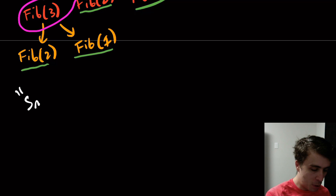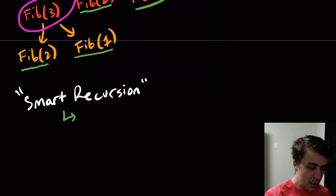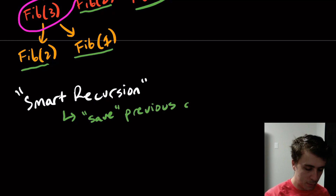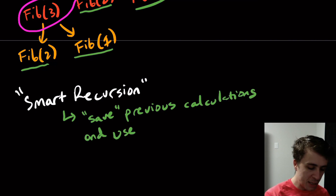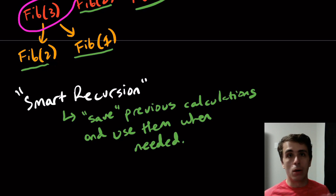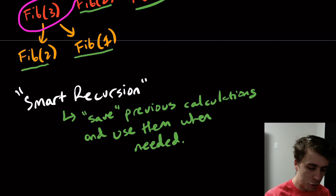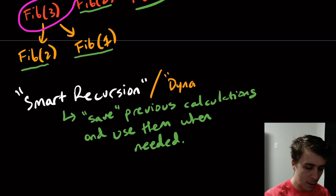What I want to do here is something called smart recursion. The whole idea behind smart recursion is to save previous calculations and use them when needed, because right now we're doing a lot of work we absolutely don't need to. There's actually another word for this — it's called dynamic programming.